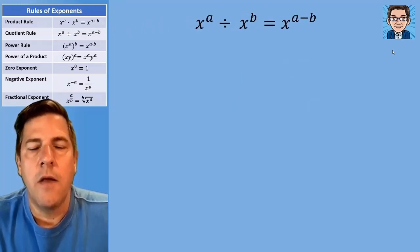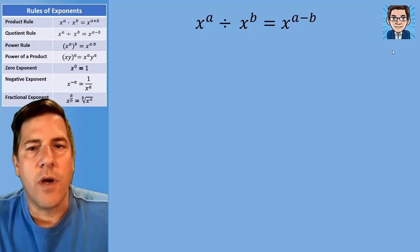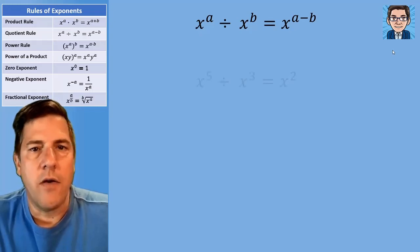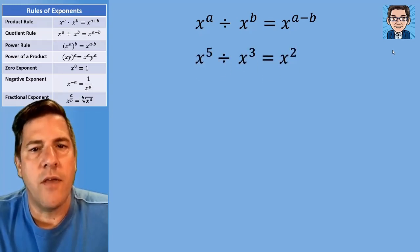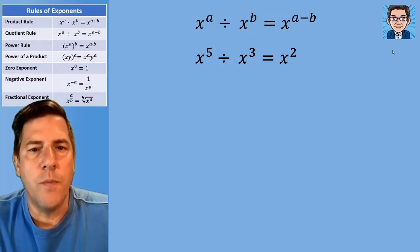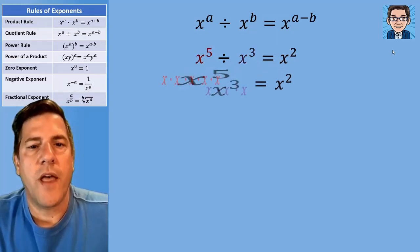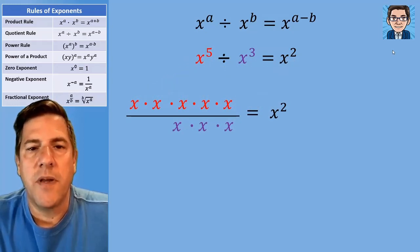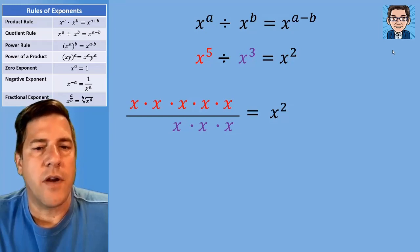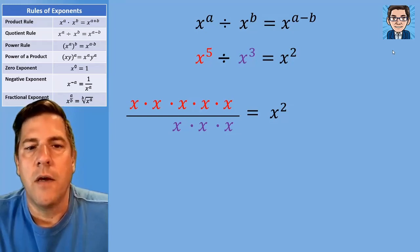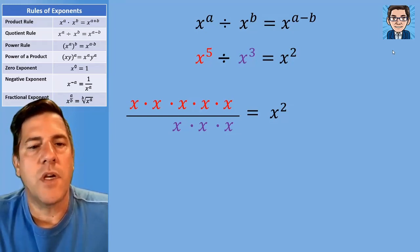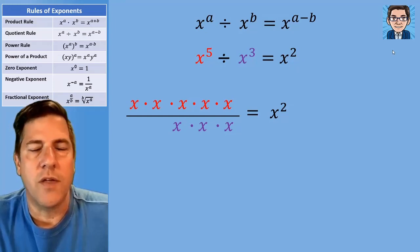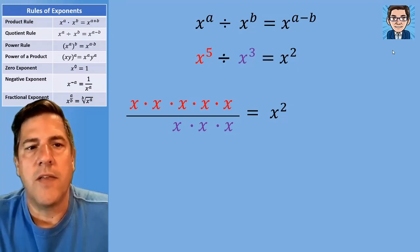The next rule is dividing. Rather than adding, we're going to subtract here. So we've got something like x to the fifth divided by x to the third — we get x to the second, because five minus three is two. Visually, if you've got five x's being divided by three x's, three of those are going to cancel out and we're left with two. That's why we subtract to get the answer.